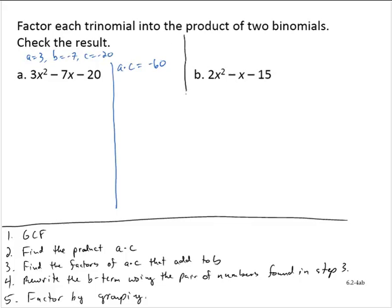We wish to find the factors of ac that add to b. Working with 60: negative 1 and 60, negative 2 and 30, negative 3 and 20, negative 4 and 15, negative 5 and 12, negative 6 and 10. Finding sums: negative 1 and 60 is 59, negative 2 and 30 is 28, negative 3 and 20 is 17, negative 4 and 15 is 11, and negative 5 and 12 is 7.